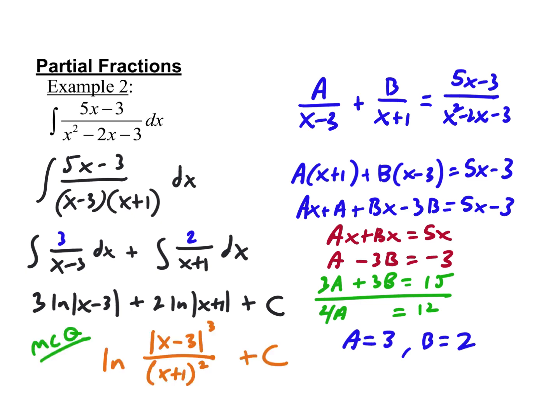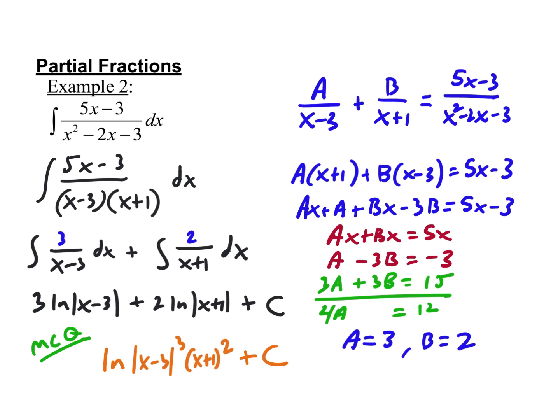This is definitely wrong — time out. When would it be division? If it was minus. I can't believe I messed that up. So this would be the absolute value of x minus 3 cubed. Do I need the absolute value for x plus 1? Why not? Because when you square it, it's positive. You could leave it though — it's fine.